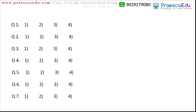Out of four options, we have to find the odd one out — the different one — and highlight it. One out of four options is different. Question 1: ear, nose, stomach, and eye. Stomach is different from the others because ear, nose, and eye are all present on the face, but stomach is not on the face. So the third option, stomach, is the different one.